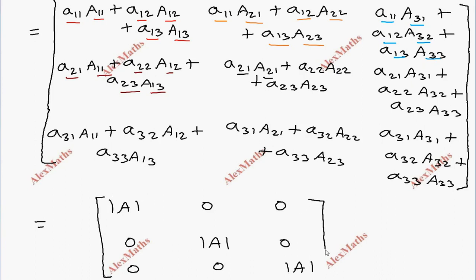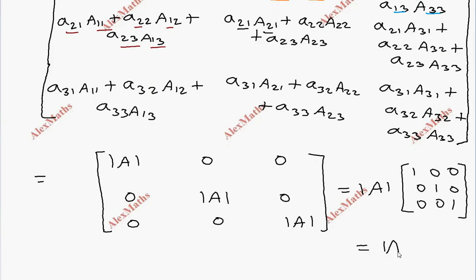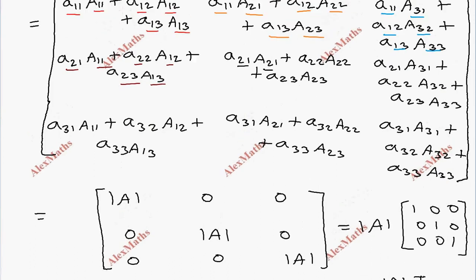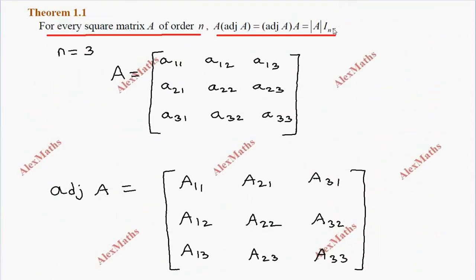So the result is determinant A times the identity matrix: determinant A into I₃, which is an identity matrix of order n. In our case n equals 3. So the first part is complete.